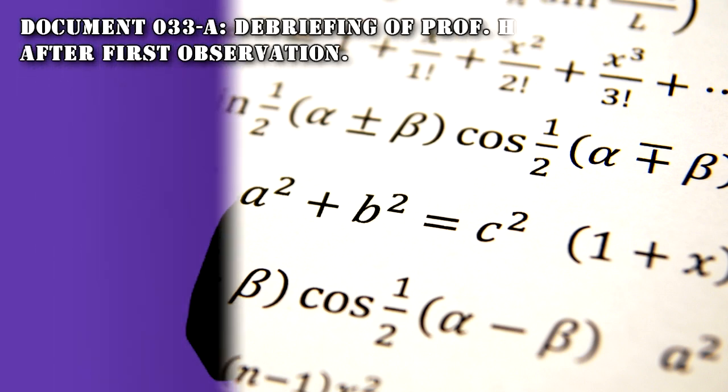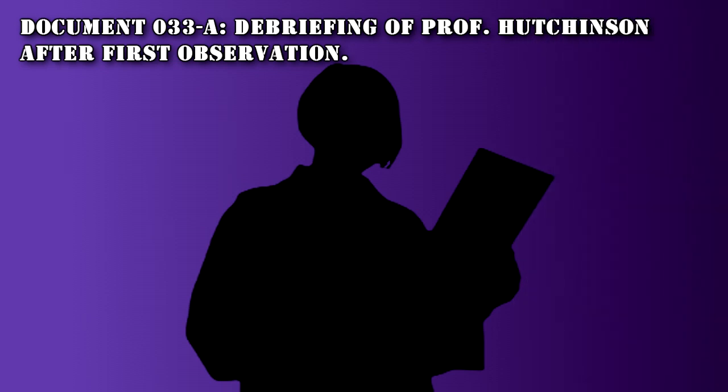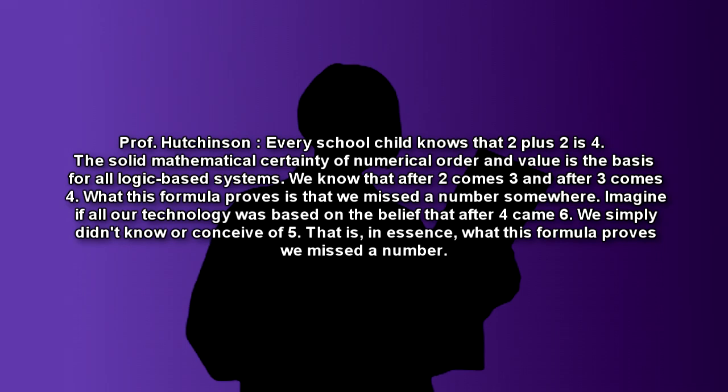Document 033-A. Debriefing of Professor Hutchinson after first observation. Transcript edited for clarity. Every school child knows that 2 plus 2 is 4. The solid mathematical certainty of numerical order and value is the basis for all logic-based systems. We know that after 2 comes 3, and after 3 comes 4.